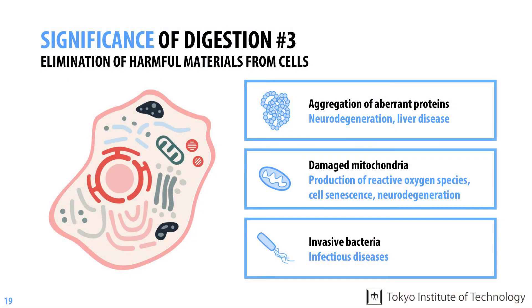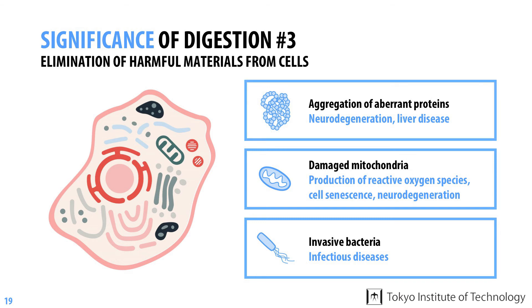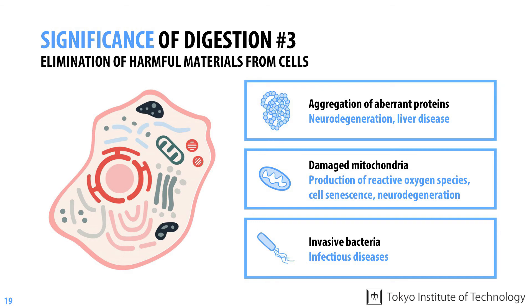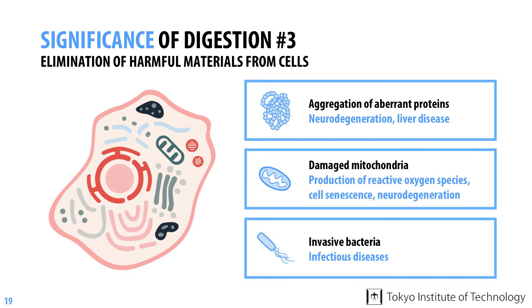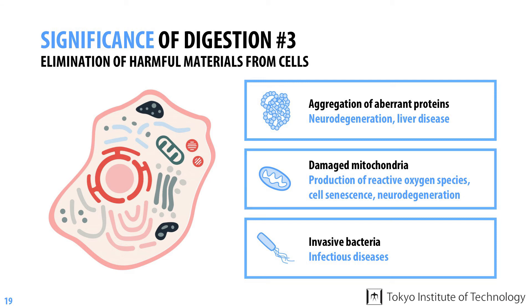Next, let's talk about the third example of the fundamental roles of autophagy. For instance, some proteins that have denatured and become abnormal due to stress or mutations can form aggregates, which are linked to neurodegeneration or liver disease. Dysfunctional mitochondria can produce reactive oxygen species that can damage other parts of the cell, resulting in cellular aging and neurodegeneration.